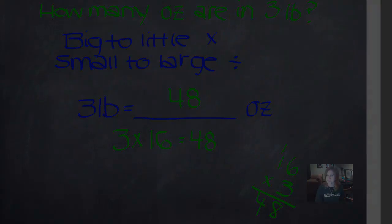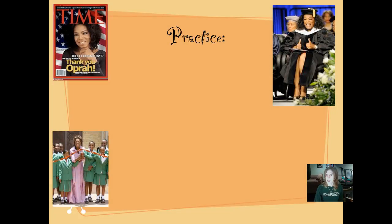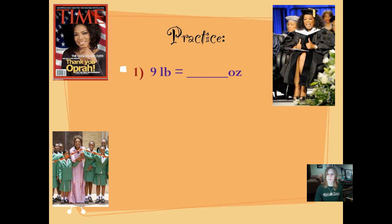Let's try some more. See if you can see how many times Oprah gives the thumbs up just like we do when we're finished with our mastery check — she likes to do it a lot, just like us. Number one: 9 pounds equals how many ounces? Use what we just showed you to figure it out. Pause it and push play when you're ready.